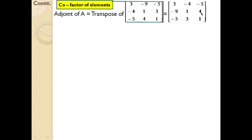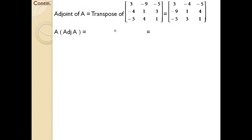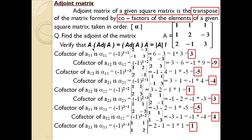So adj(A) = [3, −4, −5; −9, 1, 4; −5, 3, 1]. Remember: never take the cofactor matrix itself as the adjoint — you must take the transpose of the cofactor matrix to get the adjoint. Now let us go to the main part of the question: verifying the theorem. We have found adj(A) and A is given, so let us do the multiplication. We will discuss this in the next slide.